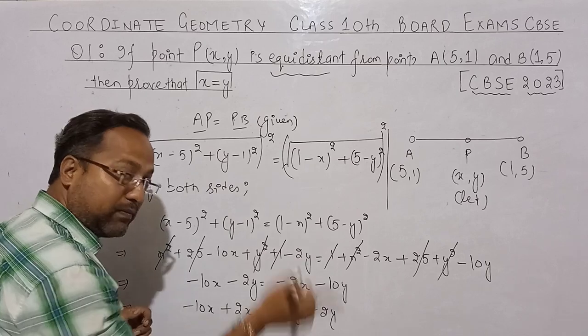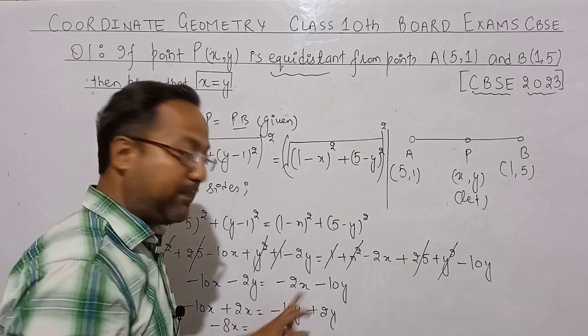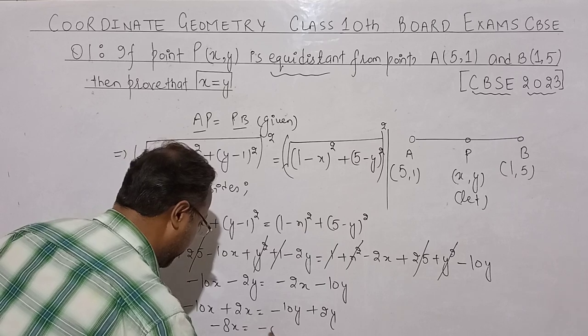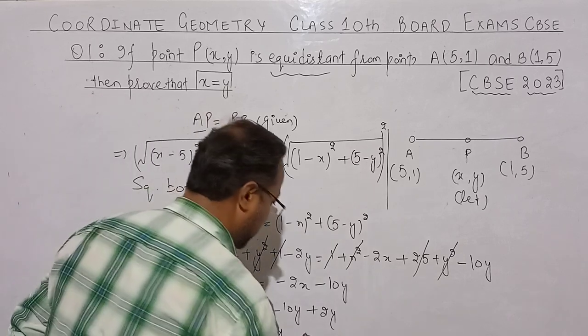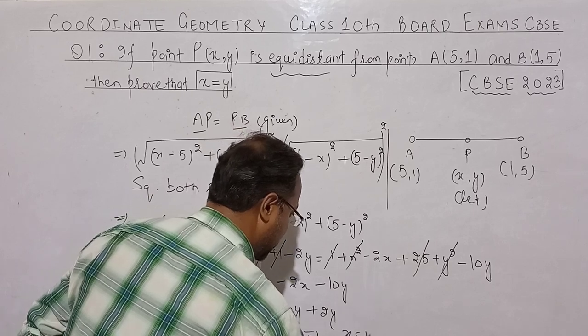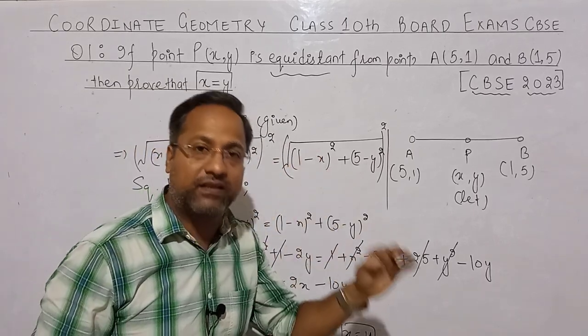Minus and plus minus gives minus 8x equals minus 8y. Minus cancel, 8 cancel. Next step: x equals 2y. Hence proved.